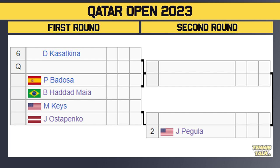That is a crazy match. Then we've got Keyes versus Ostapenko — again, another insane matchup. The winner of that will take on the number two seed Pegula in the second round. That bottom section is so, so stacked: Kasatkina, Pegula, Badosa, Haddad Maia, Keyes, Ostapenko. And we don't even know who the qualifier is because that could be Pliskova or Fernandes, who are in the qualies at the moment. Massive section of the draw, that bottom part.